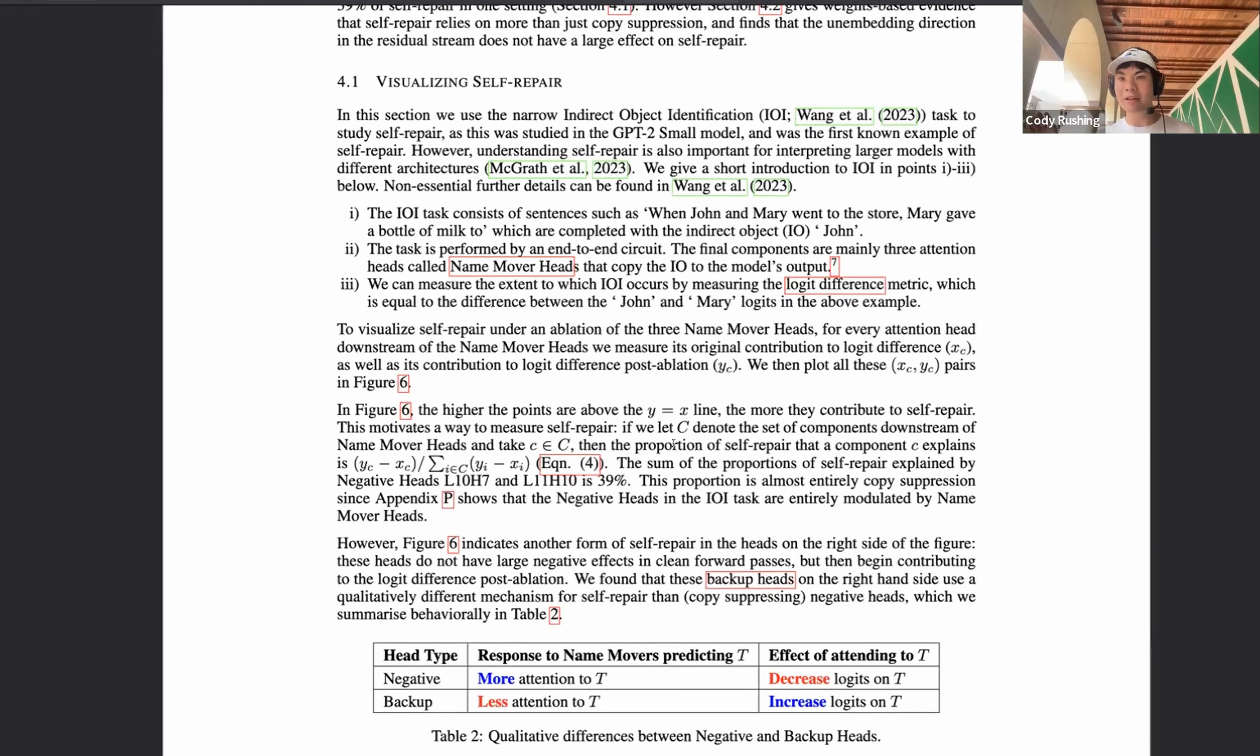Basically, at a high level, we first show that copy suppression exists in the IOI task, and then we do some more high-level, like matrix-based analysis of where can we observe self-repair. And then finally, we conclude on a bit of a sad note,